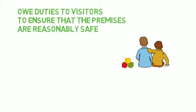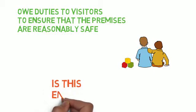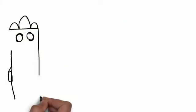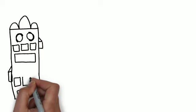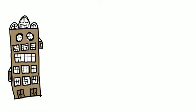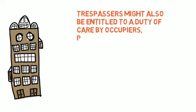This legislation deals with persons who are invited or permitted by the occupier to be there, but is this enough? Incidents occurring after the enactment of the Occupier's Liability Act 1957 demonstrated that uninvited visitors — that is, trespassers — might also be entitled to a duty of care by occupiers, in particular children, who might be attracted, for example, by a poorly fenced building site or a derelict property.